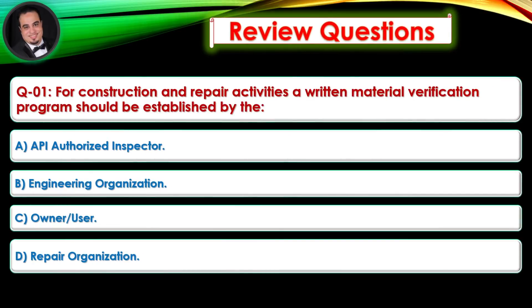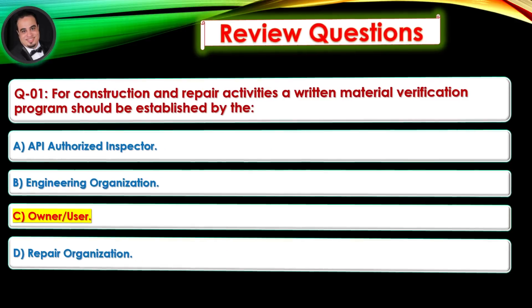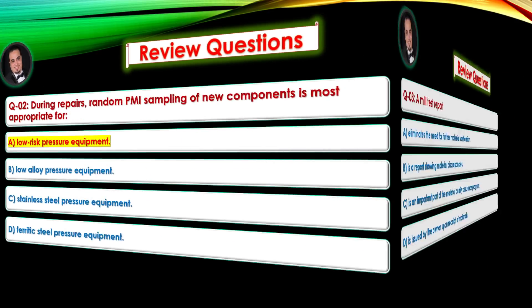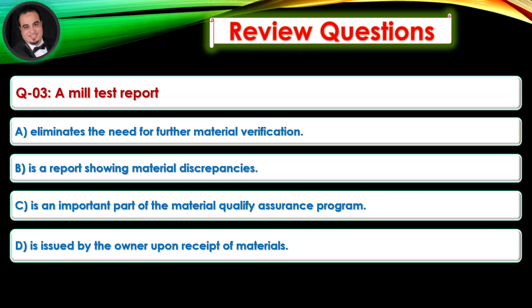Review questions: Question 1 — For construction and repair activities, a written material verification program should be established by the... Answer is C. Question 2 — During repairs, random PMI sampling of new components is most appropriate for... Answer is A. Question 3 — A mill test report... Answer is C.